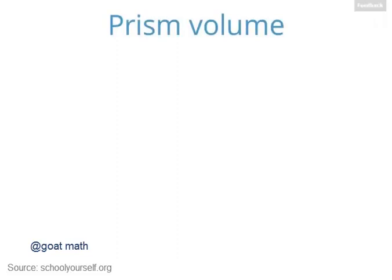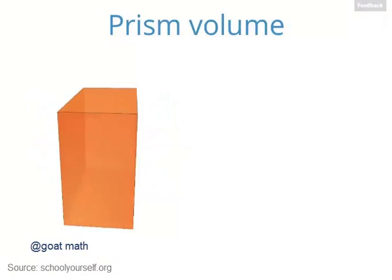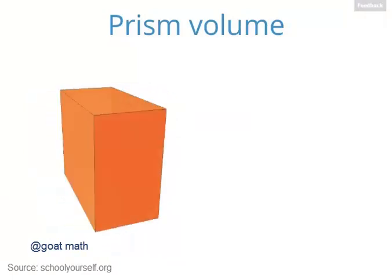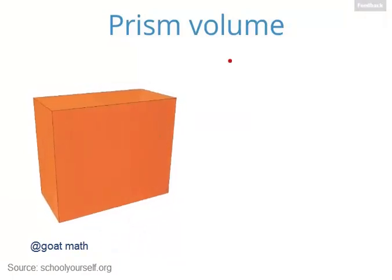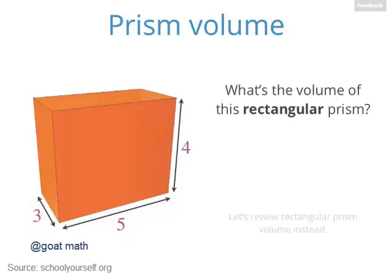Here we'll come up with a formula for finding the volumes of different prisms. First, let's see if you remember how to find the volume of a rectangular prism. It has a height of 4, a length of 5, and a depth of 3. So what's its volume?